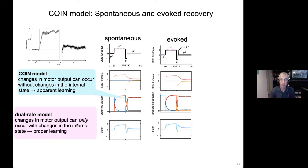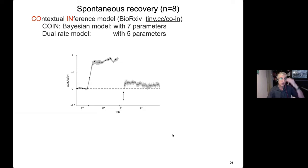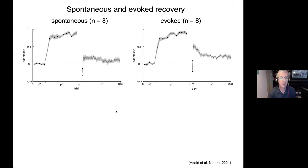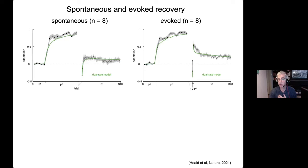One way to test between these two models is to give the system strong evidence that P plus has returned. We ran the identical paradigm except at the beginning of the channel phase we give two P plus trials. In the COIN model this is strong evidence that P plus has returned, leading to what we call evoked recovery — a rapid recovery followed by decay — rather than slow spontaneous recovery. The dual rate model can't explain this because two P plus trials aren't enough to change internal states sufficiently. When fitting both models to data, the COIN model does a really nice job on both spontaneous and evoked recovery, while the dual rate model has a qualitative mismatch for evoked recovery.